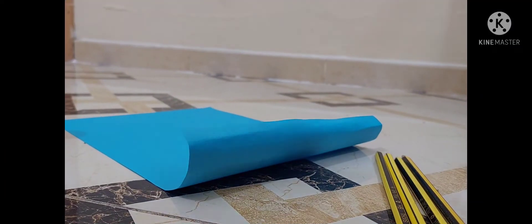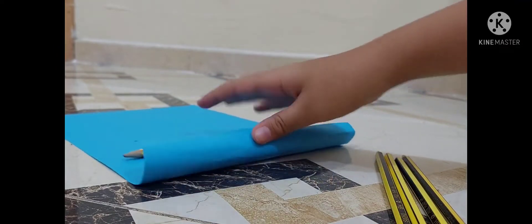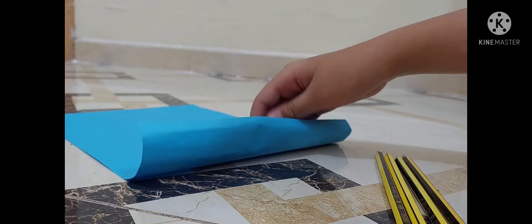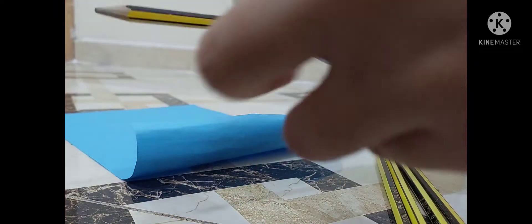So after cutting, this is how it will look. Next thing we want to do is fold the paper at the pencil, so first we're going to glue it.